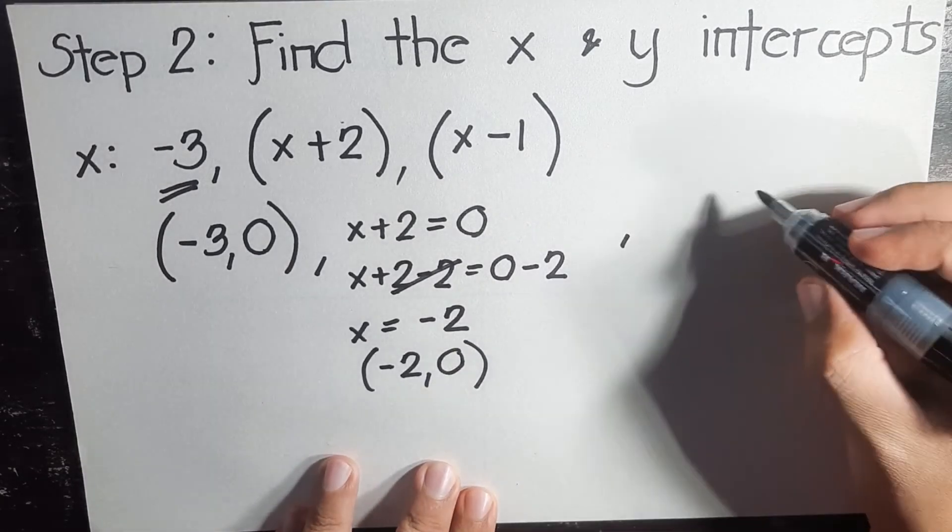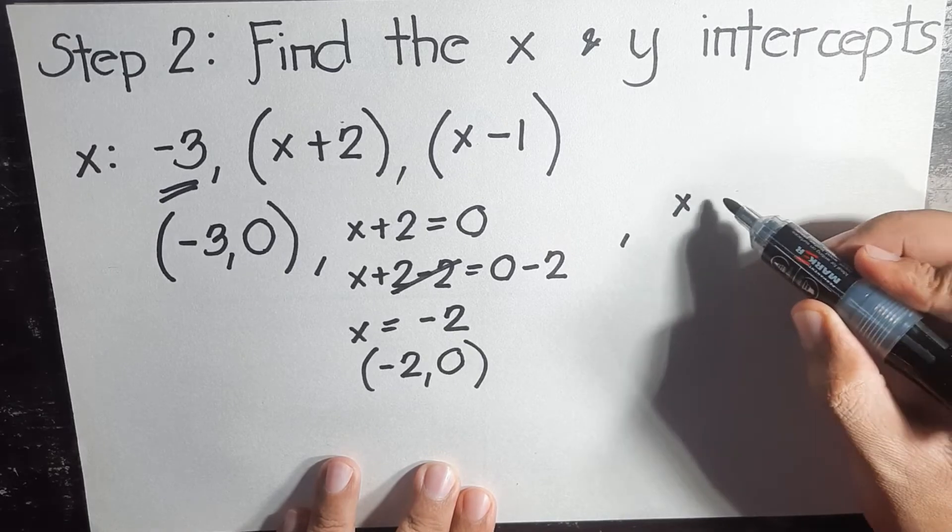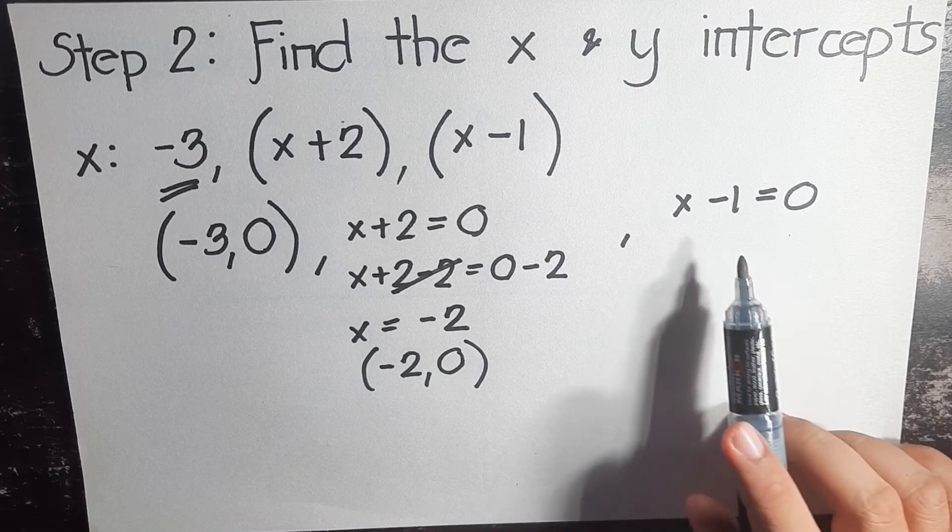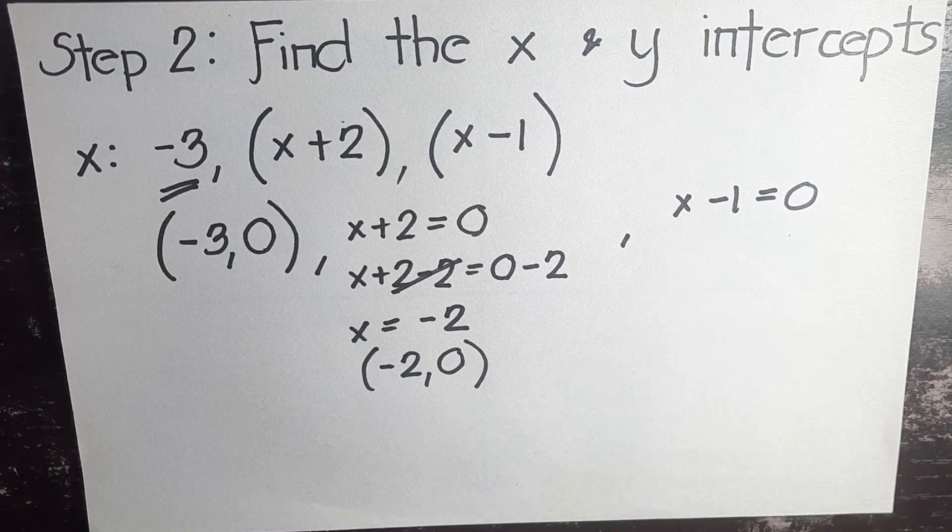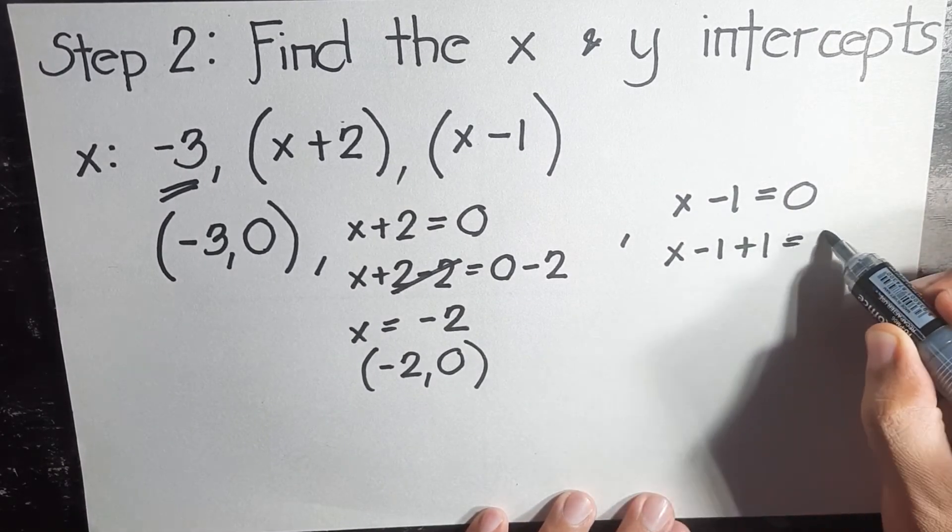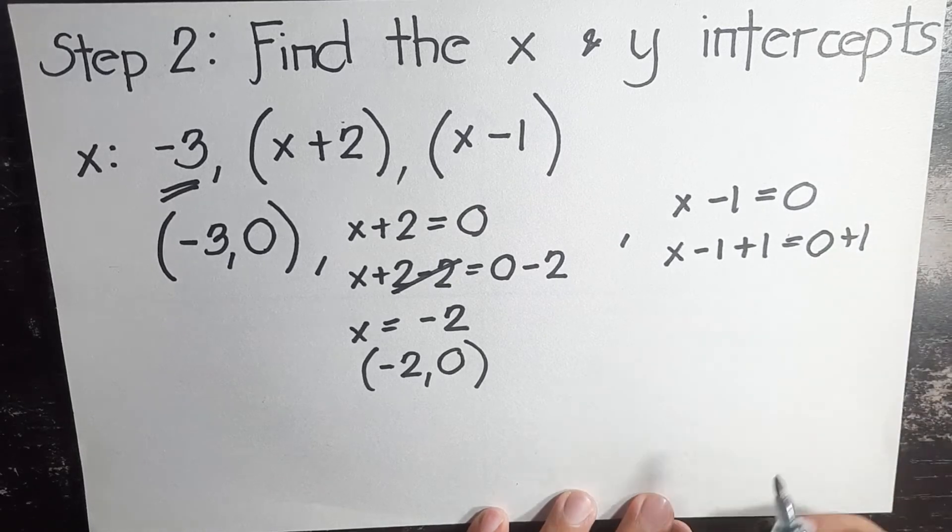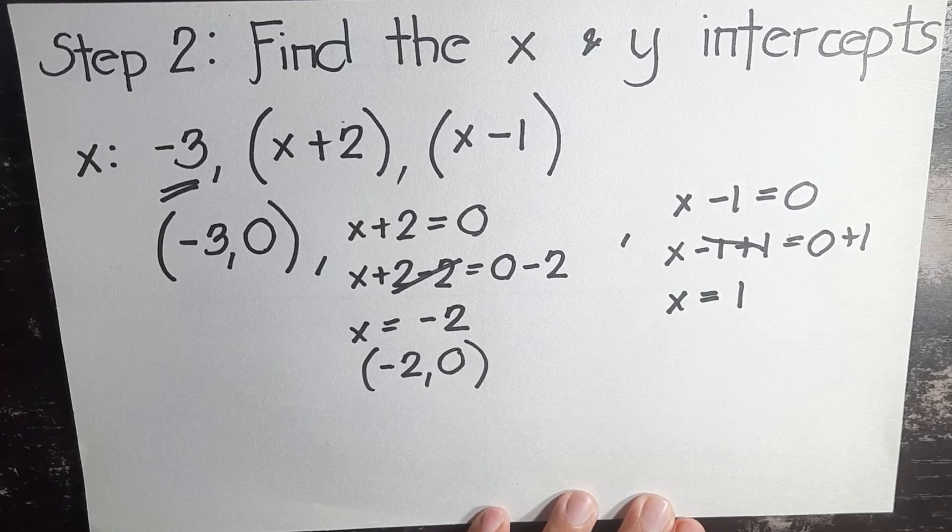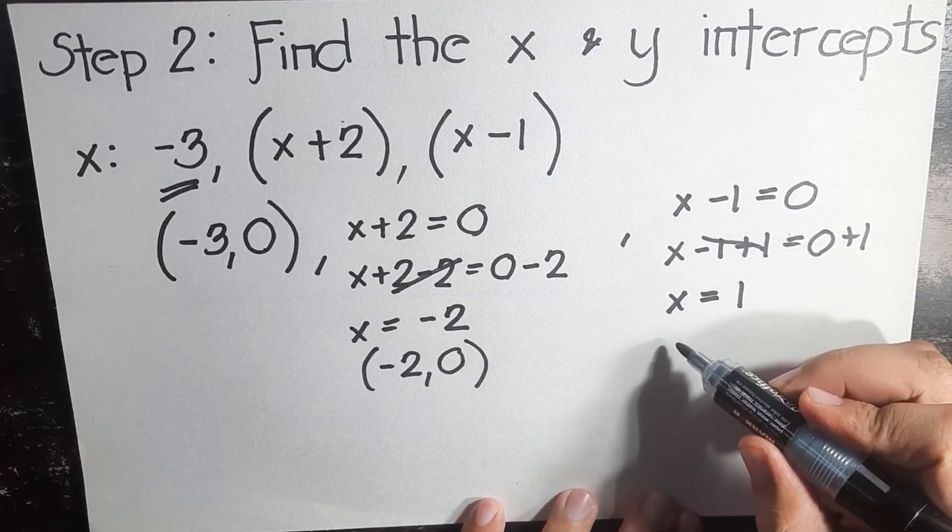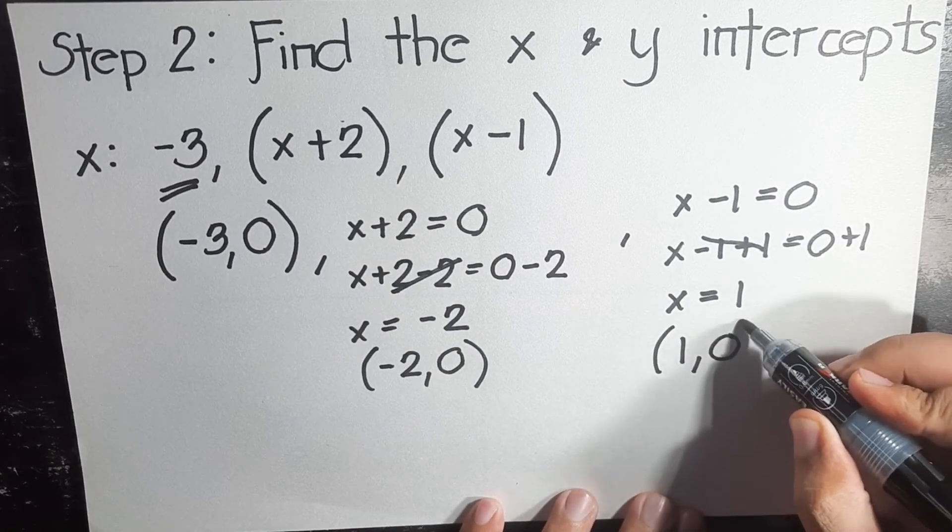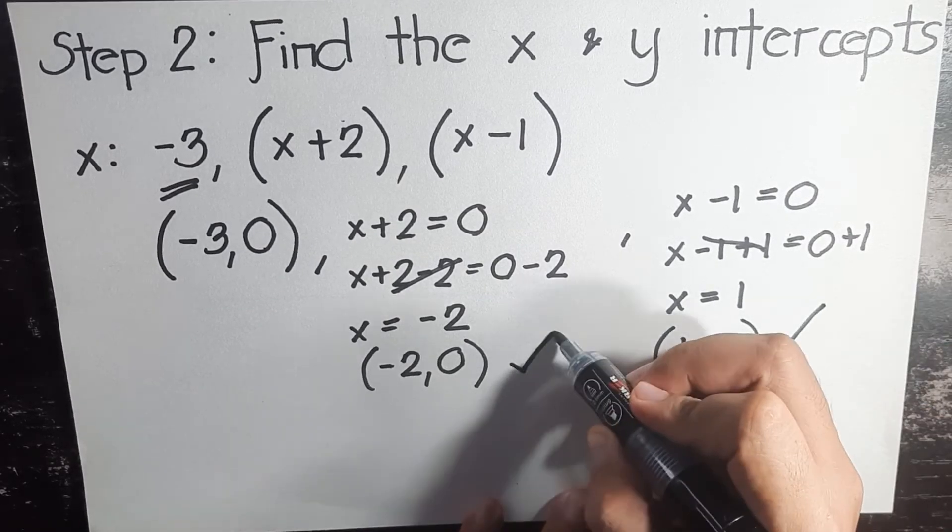Let's proceed to the last one. x - 1 = 0. Again, using addition-subtraction property of equality to eliminate this negative one, we will add one to both sides. x - 1 + 1 = 0 + 1. This will be canceled. x = 1. So our third and last x-intercept is (1, 0). So you'll have these three.